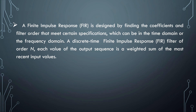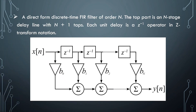A discrete-time Finite Impulse Response filter of order N: each value of the output sequence is a weighted sum of the most recent input values. In a direct-form discrete-time FIR filter of order N, the top part is an N-stage delay line with N plus 1 taps. Each unit delay is a Z minus 1 operator in Z-transform notation. This is the direct-form of discrete-time FIR filter design.